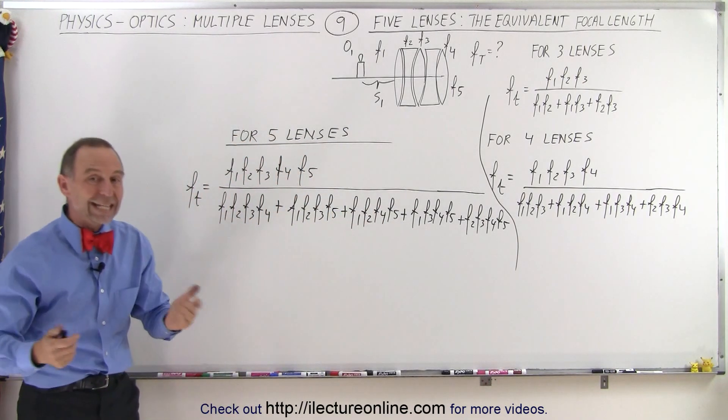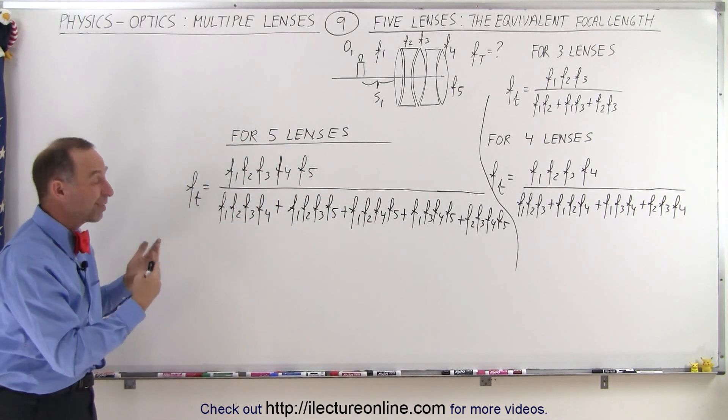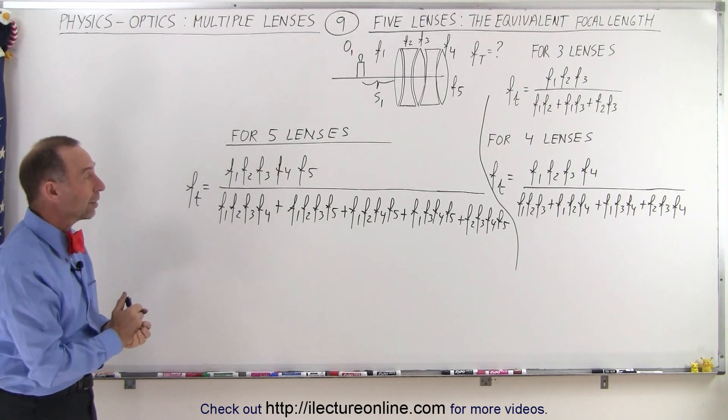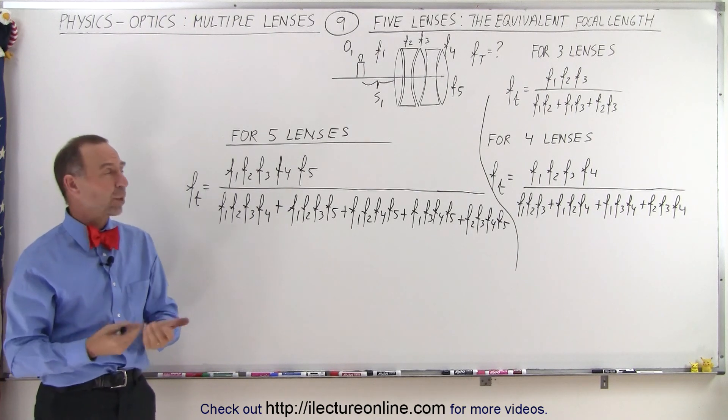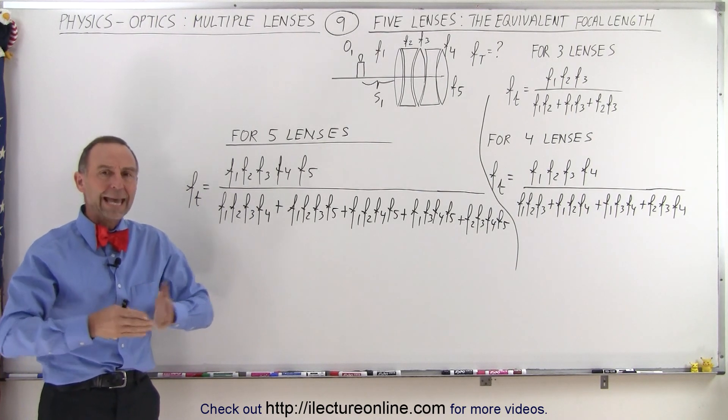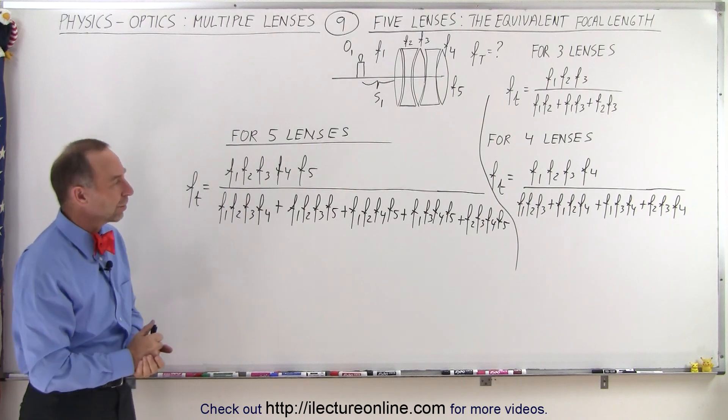And that's how you come up with any combination. So if you want to do this with six lenses, seven lenses, or eight lenses, use the same pattern. And you'll be able to figure out what that should look like. Matter of fact, we'll do a video where we can see N lenses. How do you approach that? And that's how it's done.